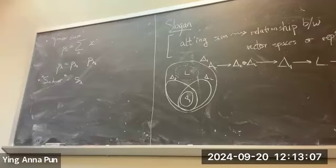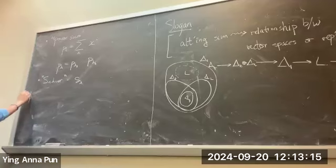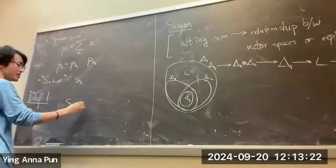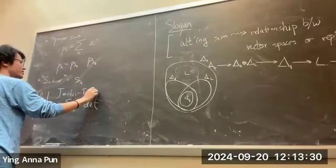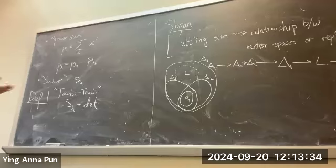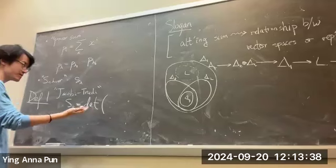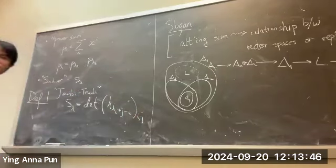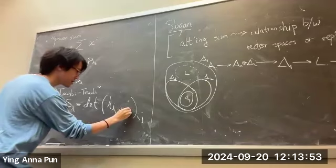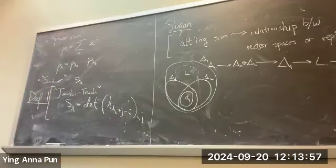The Schur polynomial has many different constructions. Definition one: S_lambda is equal to the determinant of a matrix whose (i,j)-th entry is H_{lambda_i + j - i}. This is the Jacobi-Trudi identity, and I'm taking it as one possible definition. For example, for lambda = (4,2,1), this is a 3×3 matrix. The diagonal entries are H_4, H_2, H_1; going right increases the index by 1, going left decreases it. By convention, H with a negative index is 0, and H_0 = 1.